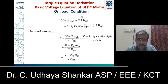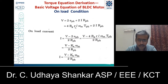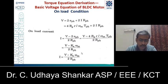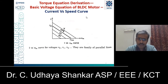Next, we move to the on-load condition. When the BLDC motor is loaded, the current I cannot be taken as negligible. The voltage equation becomes V = 2·E_phase + 2·I·R_phase. Substituting the expression for E_phase and rearranging, the constant term 4·B_G·R·ω_m can be replaced by K_e. The final expression for current under load is I = (V − K_e·ω_m) / (2·R_phase). This is the current expression for the BLDC motor under loaded condition, from which we can plot the current versus speed curve.